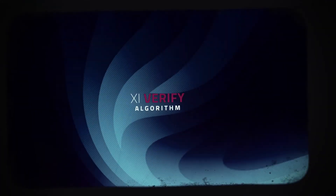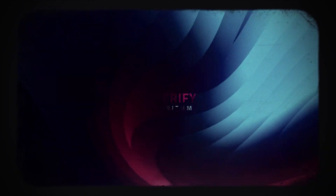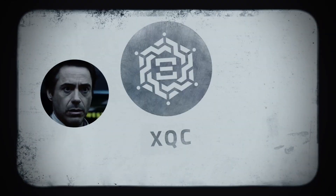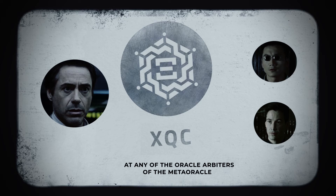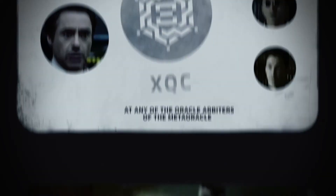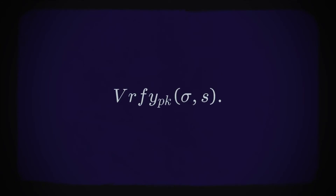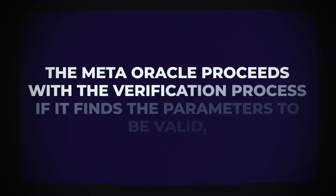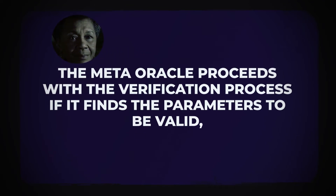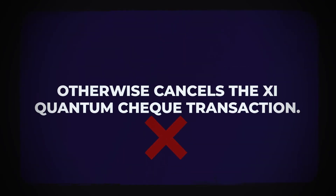In the verification process, Bob produces the XI quantum check XQC. At any of the oracle arbiters of the meta-oracle, the oracle arbiter communicates with the meta-oracle to check the validity of the ID and S pair, and a verification is run. The meta-oracle proceeds with the verification process if it finds the parameters to be valid. Otherwise, the XI quantum check transaction will be cancelled.